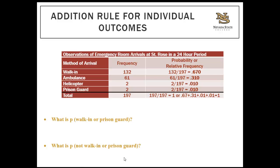Using two methods: first, add the probabilities — walk-in probability 0.67 plus prison guard probability 0.01 equals 0.68. Or add the frequencies: 132 walk-ins plus 2 prison guard equals 134, divided by 197 equals 0.68. Either way you get the same probability. Then use the complement rule: 1 minus 0.68 equals 0.32 — the probability of not being a walk-in or prison guard. You could also verify by adding ambulance (0.31) plus helicopter (0.01) to get 0.32.